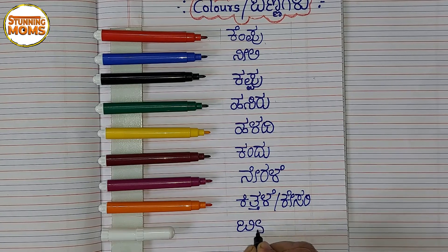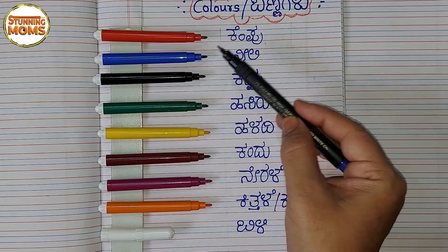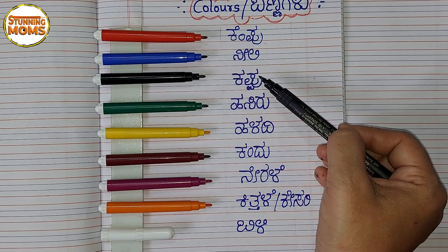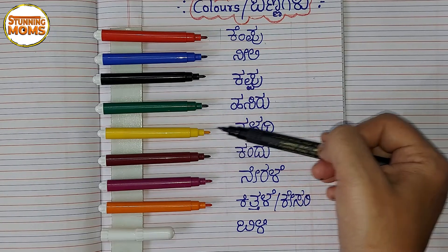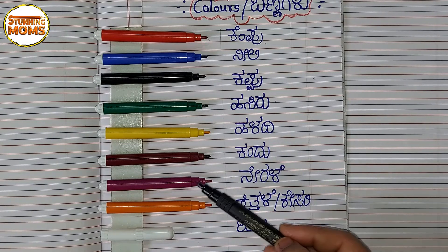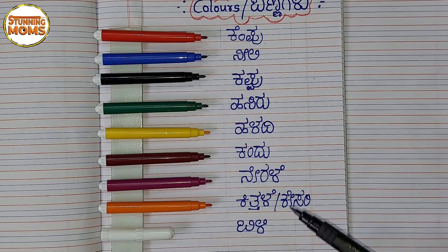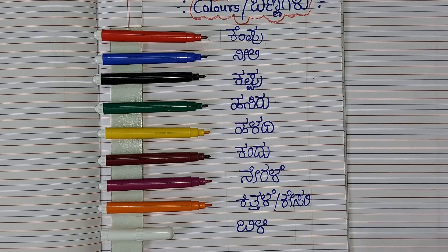Kittle banna. Once again: red color — kempu banna. Blue color — blue color. Nerele banna, kittle banna.